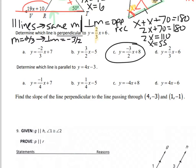The next one says which line is parallel to y equals 4x minus 3. So what's my slope in that equation? 4. And it wants parallel, so my parallel slope is also 4. And I only have one answer, D.